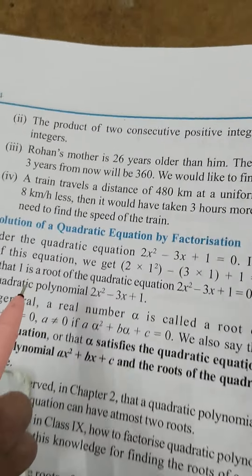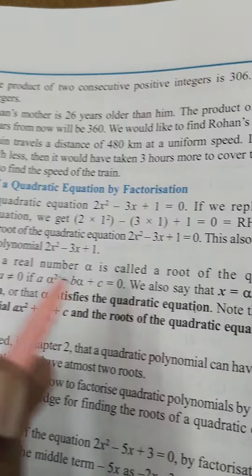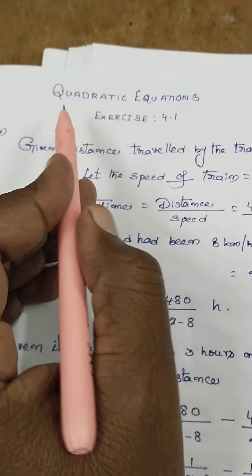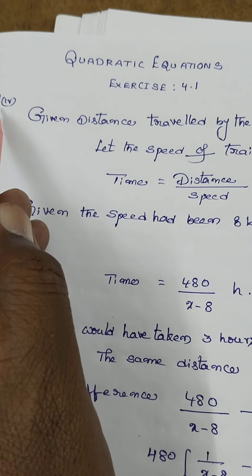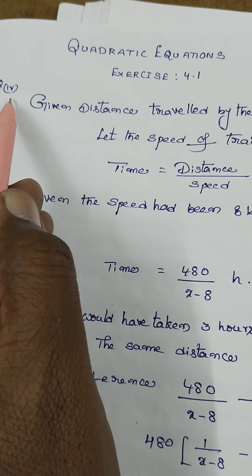In the quadratic equation formula, first quadratic equation exercise 4.1, this is problem number four.